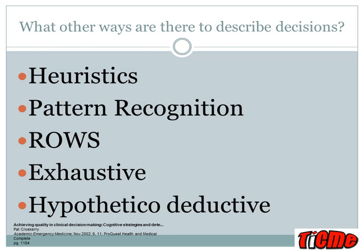There are other ways to describe the sorts of decision processes we use, particularly in emergency: heuristics, pattern recognition, the rule-out worst-case scenario technique — make sure that's not an infarct before worrying about the musculoskeletal pain — the exhaustive method, which is classically more the physician model where you work through something from one end and rule everything out in between, and the hypothetical-deductive model, which is the more scientific approach: come up with a hypothesis, test it by designing an experiment, and prove it correct.